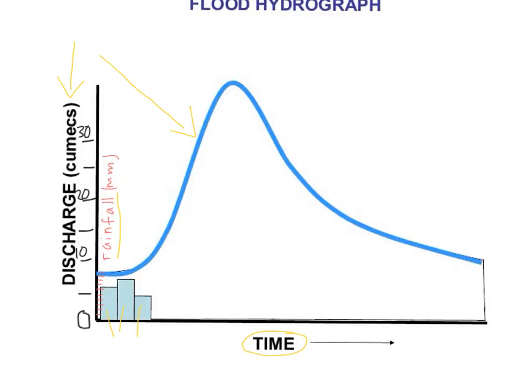So let's take a look at a hydrograph. On the x-axis you will see time, and this is usually given in hours, and the y-axis has two pieces of information.